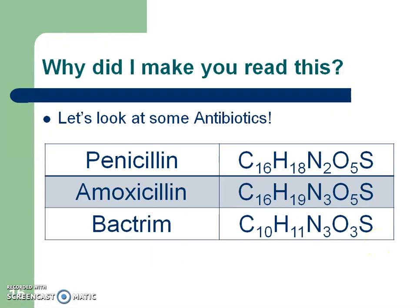For those of you who might be allergic to certain antibiotics, let's look at these three as an example: penicillin, amoxicillin, and bactrim. Notice all three antibiotics contain carbon, hydrogen, nitrogen, oxygen, and sulfur. But notice these little subscripts — these little subscripts tell us the chemical formula. The difference between all three of them is different amounts of those particular elements. If you're allergic to penicillin, that's okay because there are so many other antibiotics out there that can do the same thing. But your body, and everybody's body is different, reacts to different chemicals in different ways. This chapter is so important because it could mean a doctor prescribing something that goes from life to death.